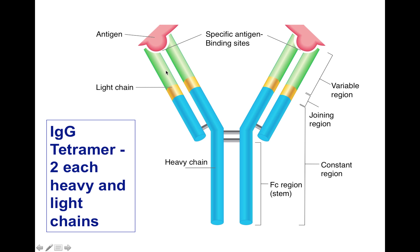Just to review: antibody molecules have two light chains attached to two heavy chains, and the antigen binding site is created in what we call the variable region of the antibody. There's also a region called the joining region, and the C region is the constant region. There's another region called the D region for diversity in the heavy chains that's not present in the light chains. So we have variable region, joining region, a diversity region in the heavy chains, and the constant region.